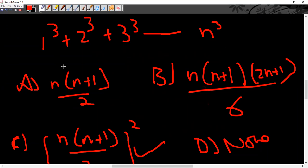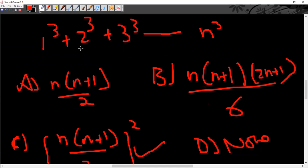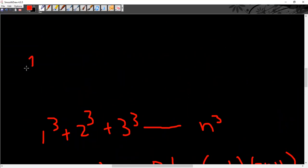The same thing is that 1 cube is 1, 2 cube is 8, 3 cube is 27. So add them. 8 plus 1 is 9, 9 plus 27 is 36.